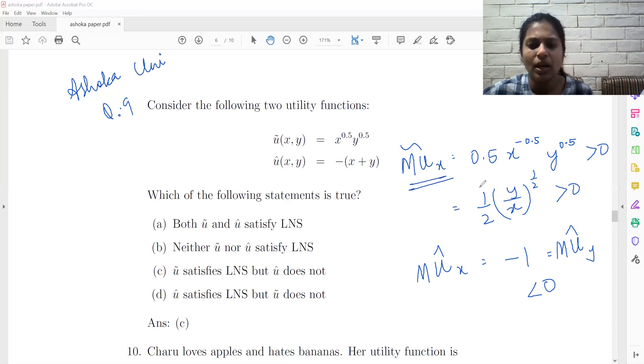Marginal utility of good x and y is positive for the curl utility function and it's negative for the hat utility function. So the curl utility function will satisfy local non-satiation and this will not satisfy local non-satiation. So the answer should be c.